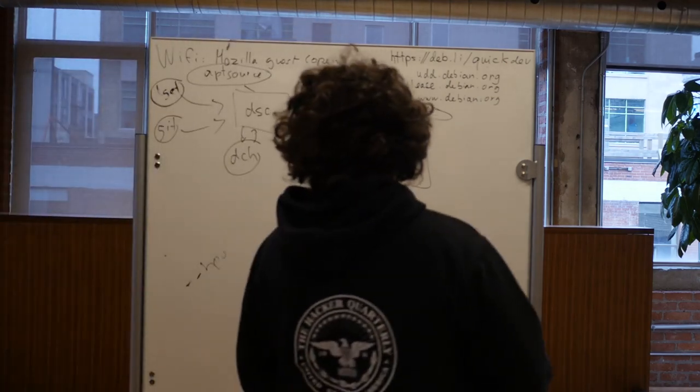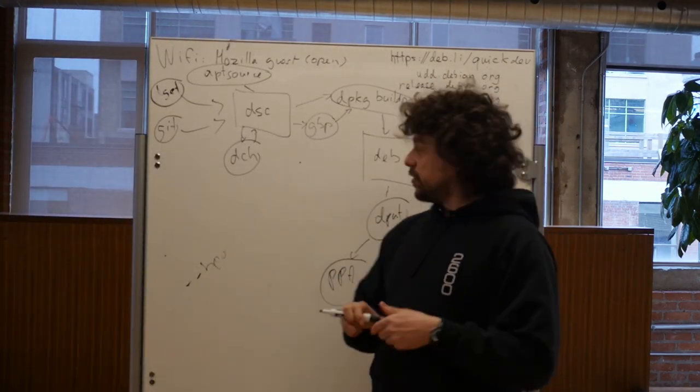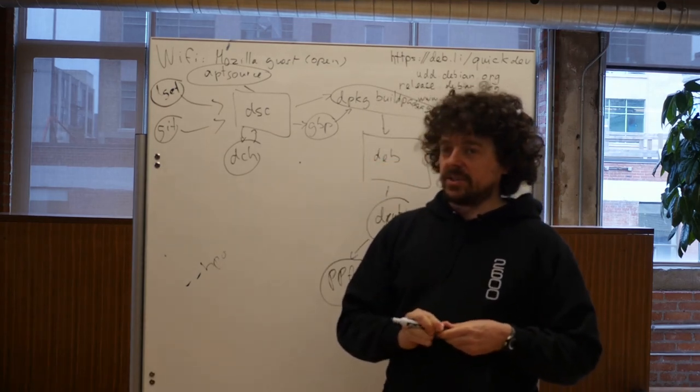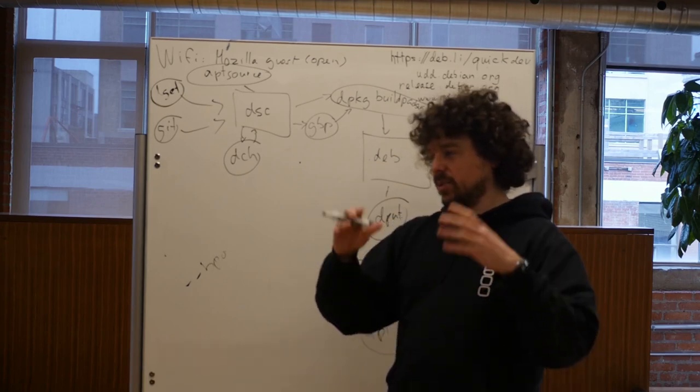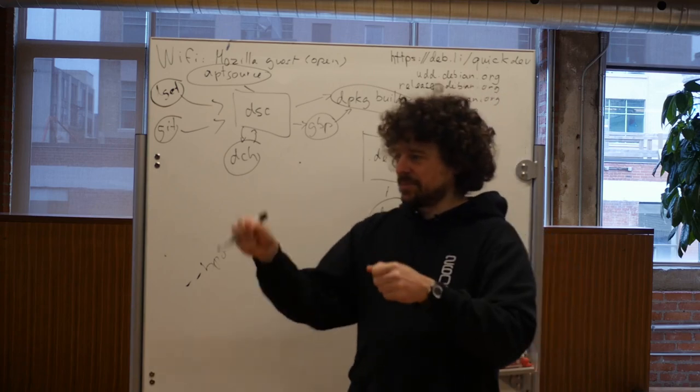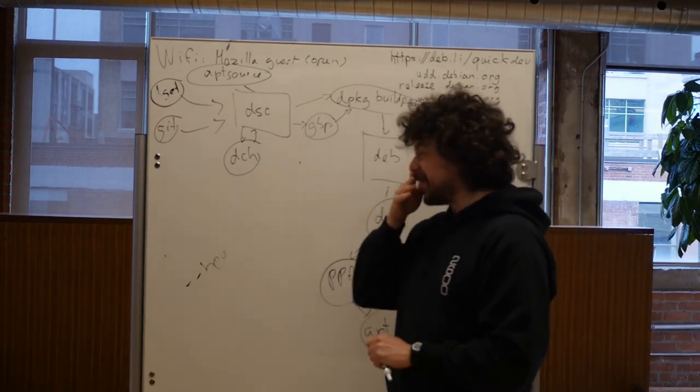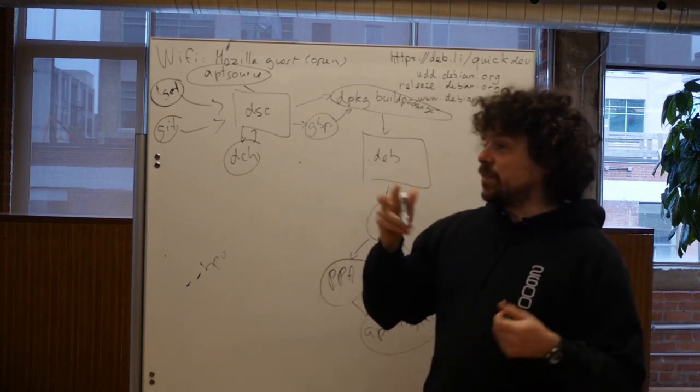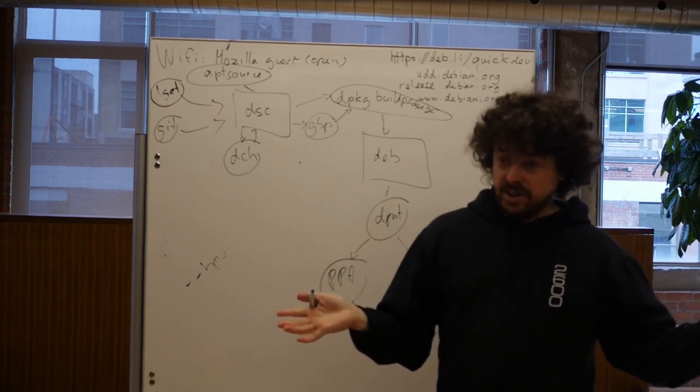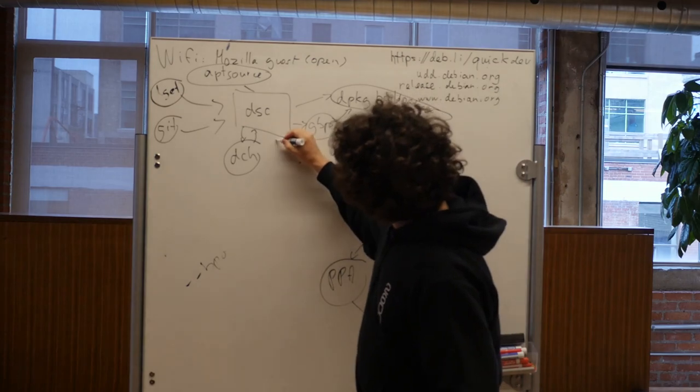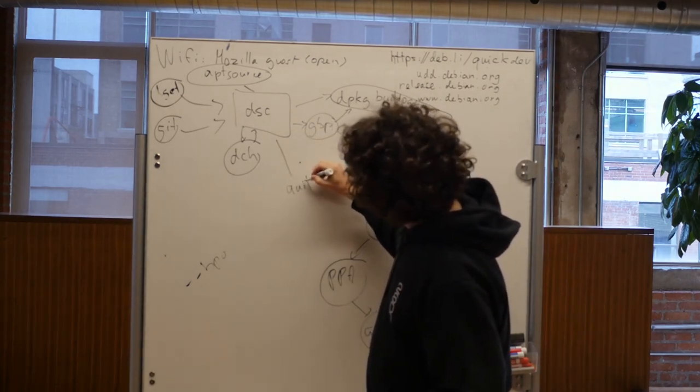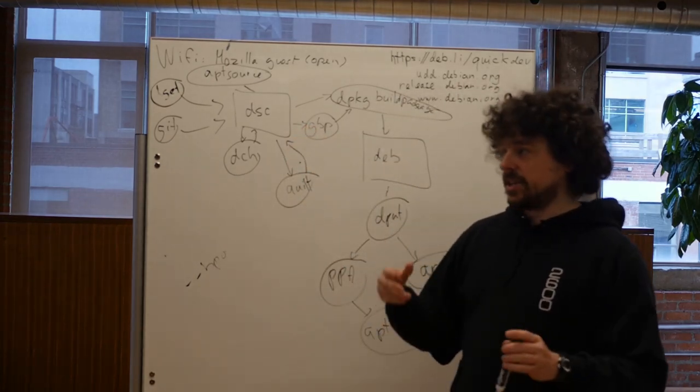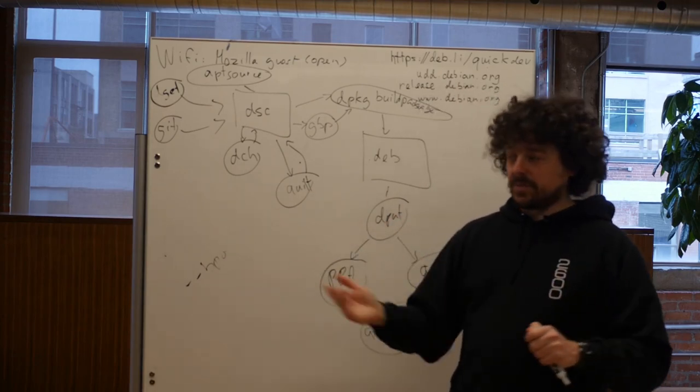There are other tools that exist that make it easier for us to do that. One of those tools is Quilt, which I also mentioned earlier. Quilt is something that Debian packaging, that we use in Debian packaging to track patches. Like a quilt is a set of patches. When you make a quilt, you take a bunch of patches and you sew them together. So Quilt is a way to order and manage patches.